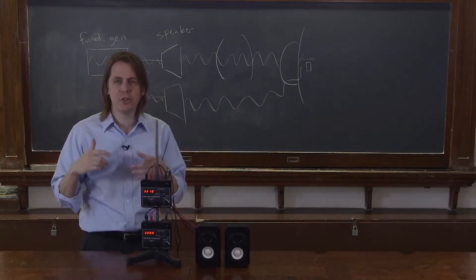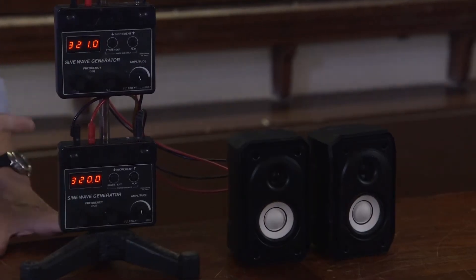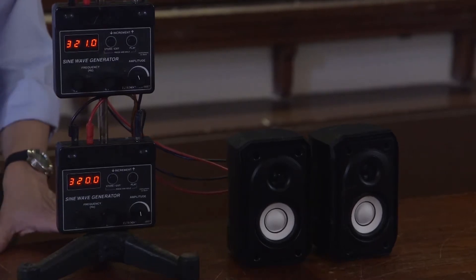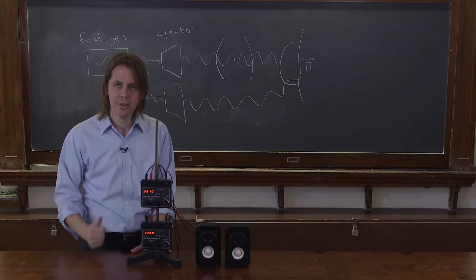The beat period should come out to be the difference in frequency. So here I have a difference of 1 hertz, 321 and 320. And you can hear it is at about 1 hertz. If you check it on your little YouTube clock, it's about 1 hertz.